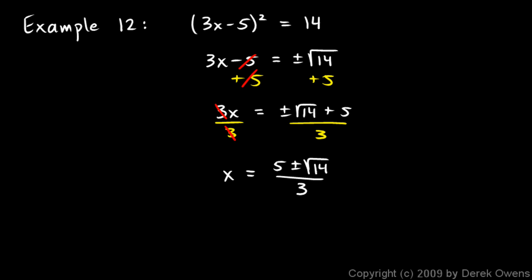Those are my answers: 5 plus the square root of 14 over 3, and 5 minus the square root of 14 over 3. Now notice we could also write x as 5 thirds plus or minus the square root of 14 thirds. Either of these is really fine — they're both mathematically equivalent and both represent two solutions. Most math teachers would accept either one. If you were told specifically to leave your answer as a single fraction, you would need to do that, but it's pretty easy to see that those two are equivalent.